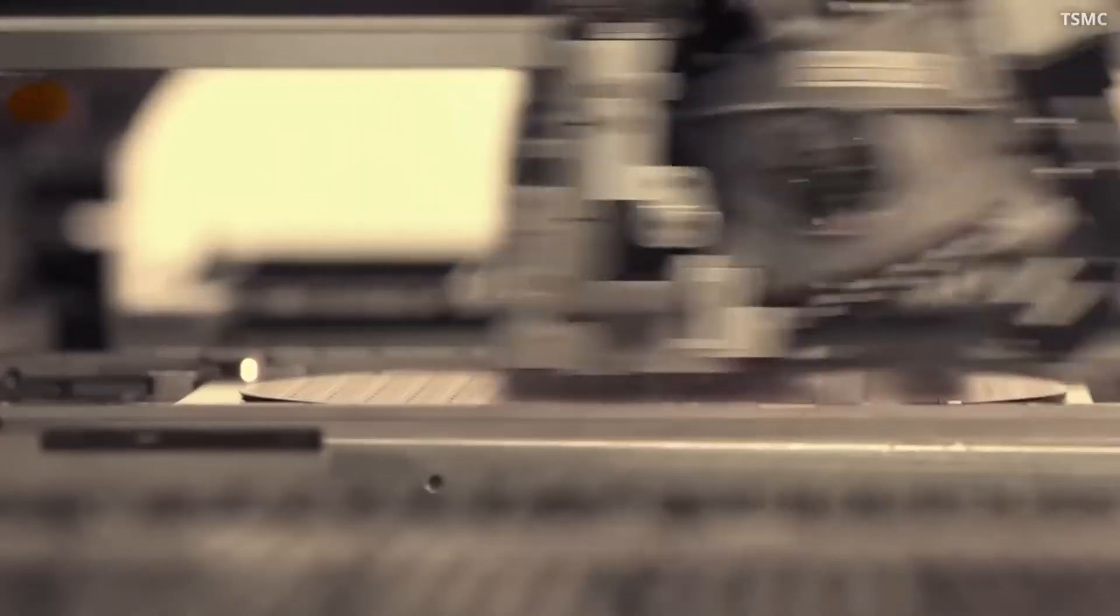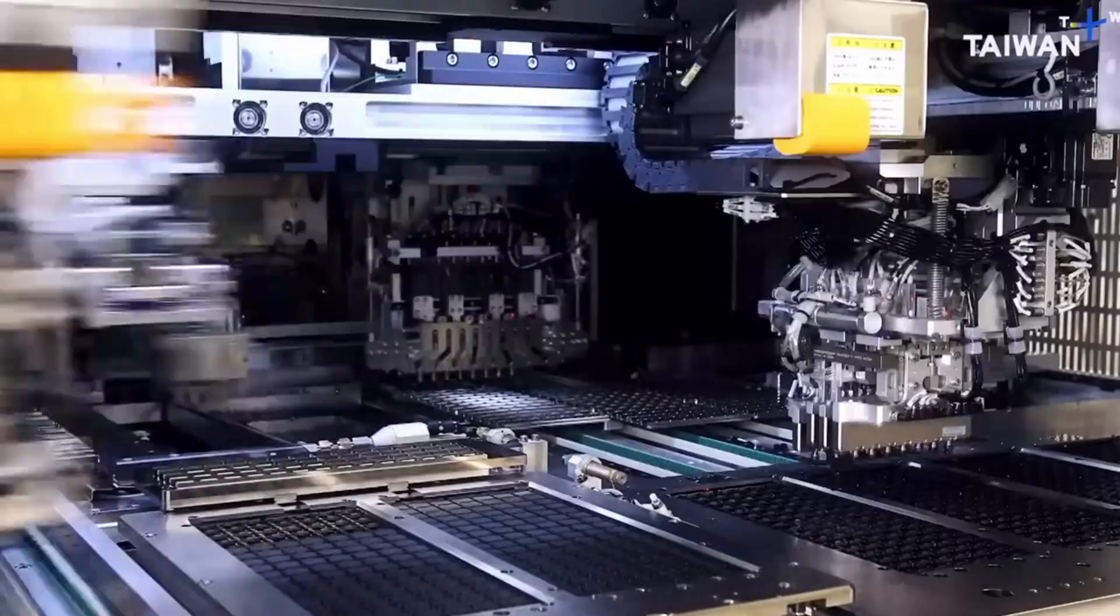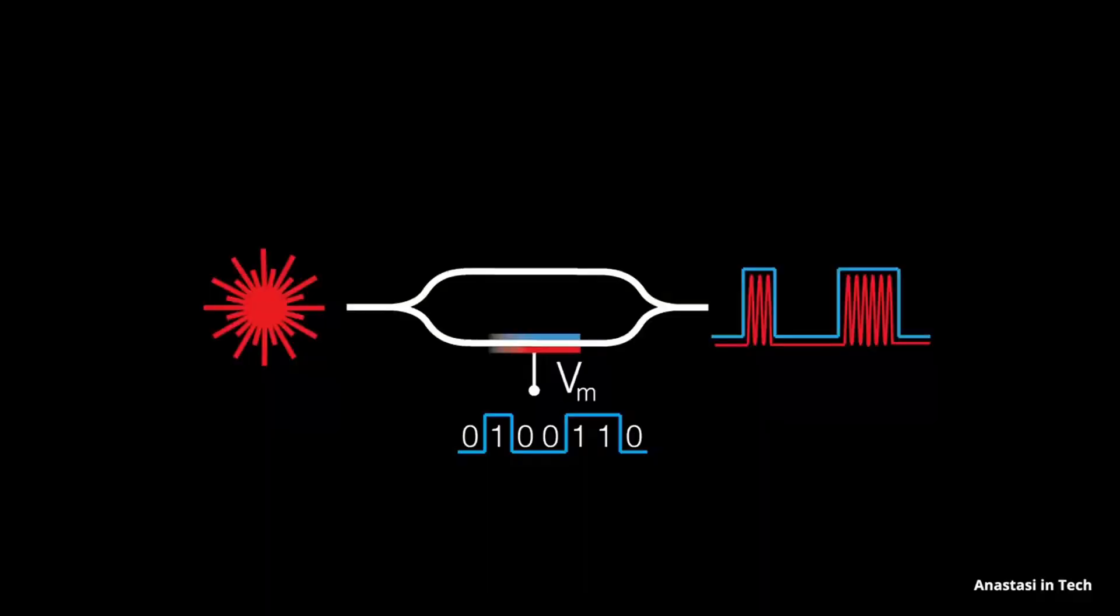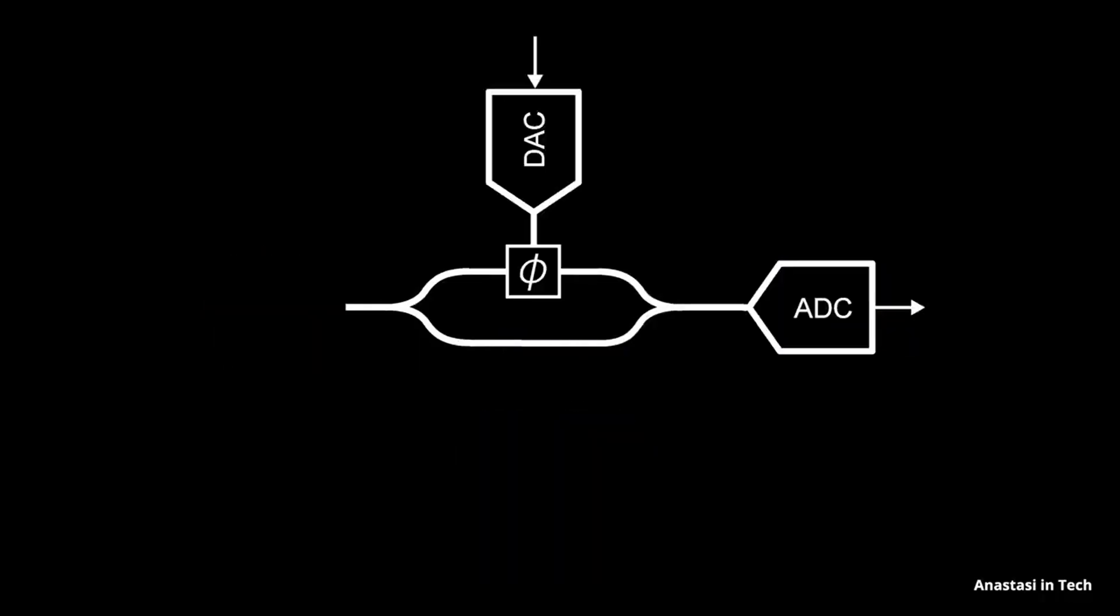So engineers came up with a clever solution. Instead of building the transistor flat, they raised a part of it into a vertical fin shape, like a tiny shark fin sticking out of water. This design, called FinFET, gave engineers better control of how electricity flows through each switch. It was a major breakthrough and carried us through the last decade of chip improvements.